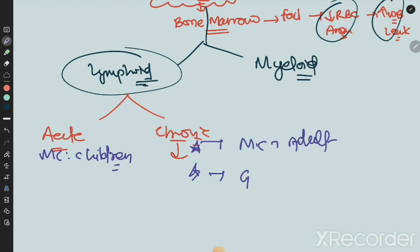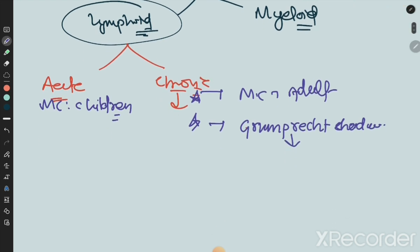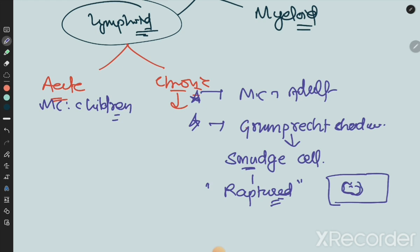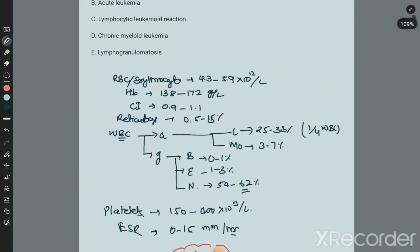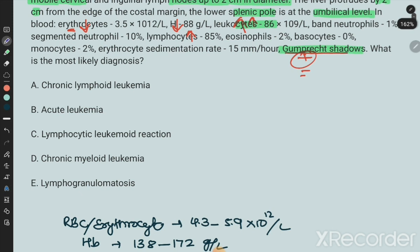In Krok exams, we use the term Gumprecht shadow, but in other examinations including USMLE, the term is smudge cell. These are chronic lymphoma-like leukemia cells that are ruptured during smear preparation. They show reduced expression of the cytoskeleton protein vimentin, which correlates with clinical outcome. Gumprecht shadow itself is enough to diagnose chronic lymphoid leukemia.